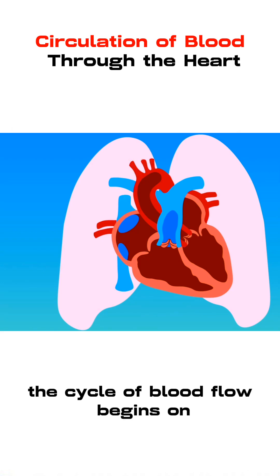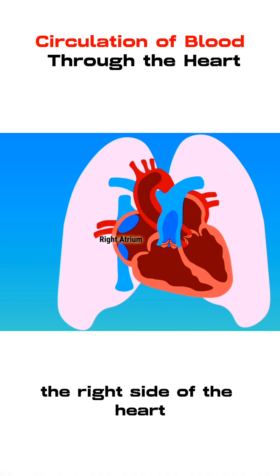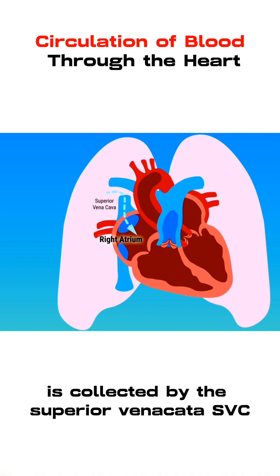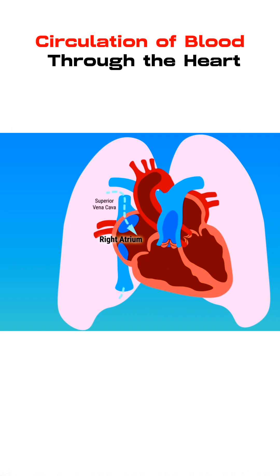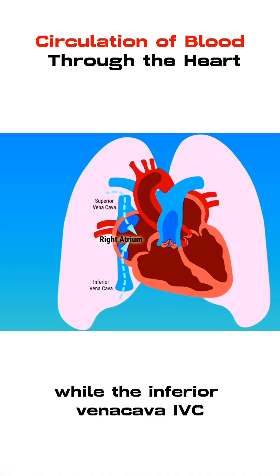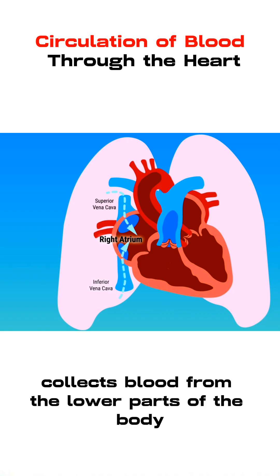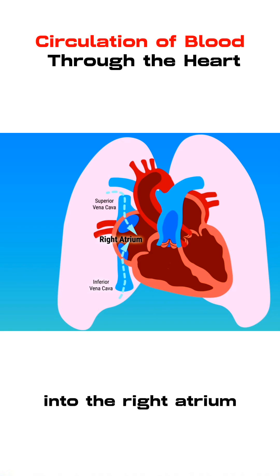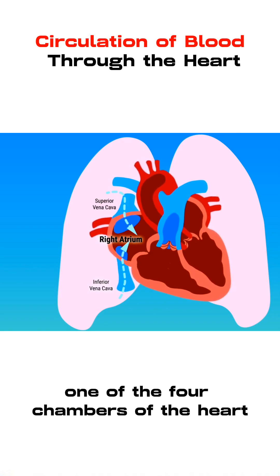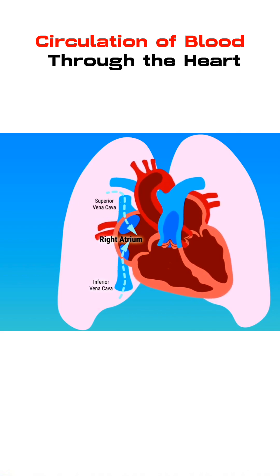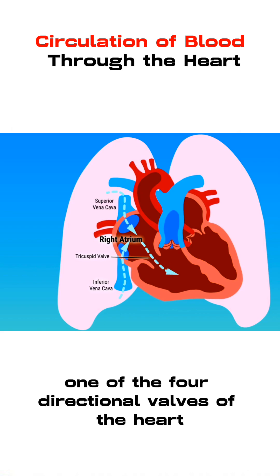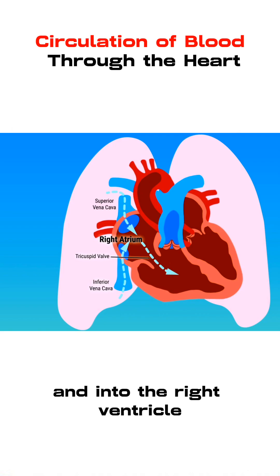The cycle of blood flow begins on the right side of the heart. Deoxygenated blood from the head and upper body is collected by the superior vena cava (SVC), while the inferior vena cava (IVC) collects blood from the lower parts of the body and delivers the deoxygenated blood into the right atrium, one of the four chambers of the heart. Blood is then pumped through the tricuspid valve, one of the four directional valves of the heart.